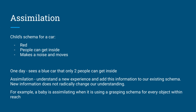Another example is a baby assimilating when it's using a grasping schema for every object. As it goes to pick up an object, it's grasping with one hand, picking everything up with that one hand, and it does that every time it tries to reach for something.